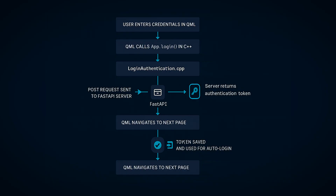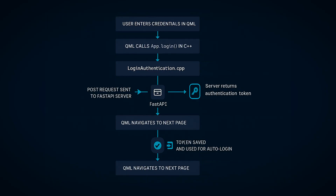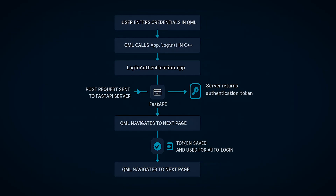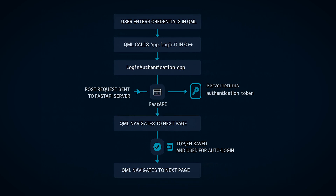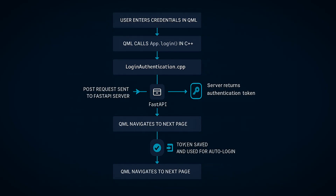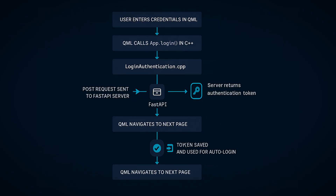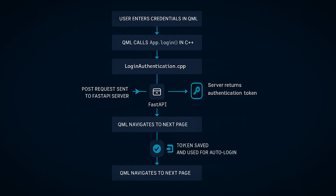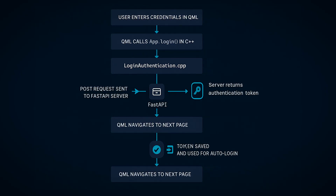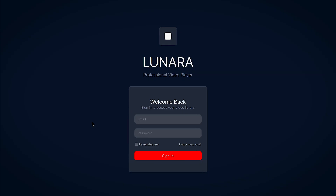To recap: the user enters credentials in QML and clicks sign in. QML calls app.login, which goes to the LoginAuthentication class and sends a POST request to our FastAPI server. If successful, it extracts the token, stores it if remember me was checked, and emits loginSuccessful. QML listens to that signal and navigates to the next page. If remember me was checked, the token is saved, and on next launch we try auto login so the user doesn't have to enter credentials again. Everything is modular and clean — you can reuse the login module in any Qt application regardless of the backend.